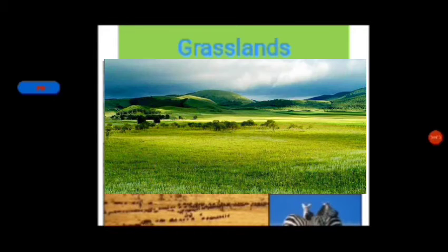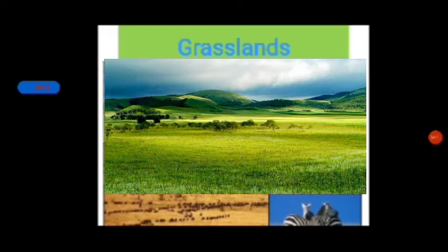Students, we will discuss now the grasslands. Can you tell me what are the grasslands? Grasslands are flat and open areas where the vegetation is dominated by grass. Grass occurs naturally on all continents except Antarctica. Grasslands grow in areas that receive moderate rainfall.